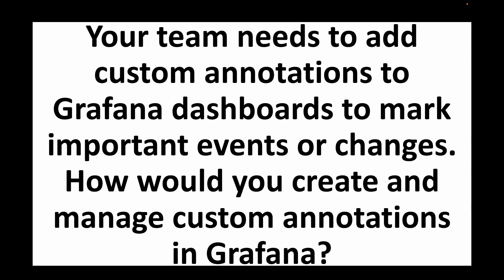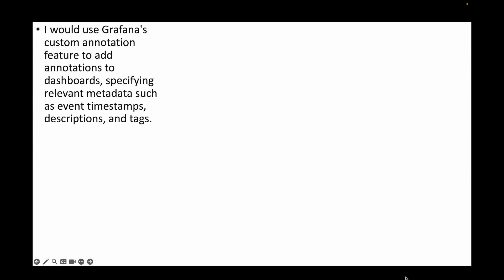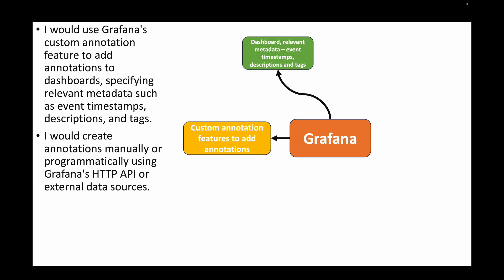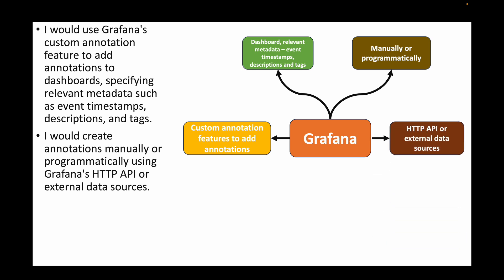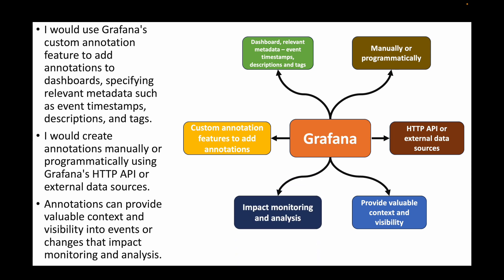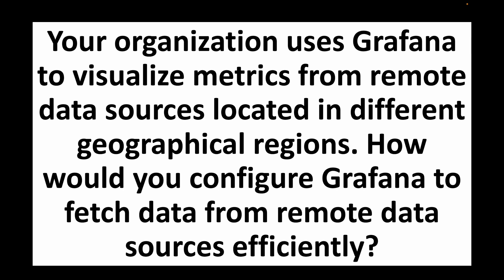The next question: your team needs to add custom annotations to Grafana dashboards to mark important events or changes — how would you create and manage custom annotations? We can use Grafana's custom annotation feature to add annotations to dashboards specifying relevant metadata such as event timestamps, descriptions, and tags. Annotations can be created either manually or programmatically using Grafana's HTTP API or external data sources. Annotations provide valuable context and visibility into events or changes that impact monitoring and analysis.